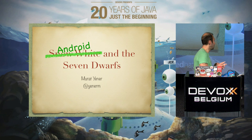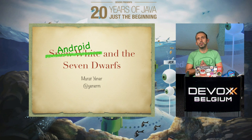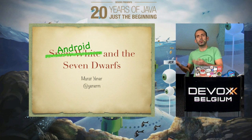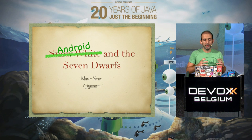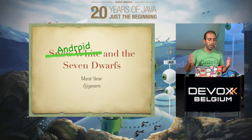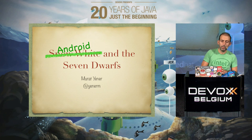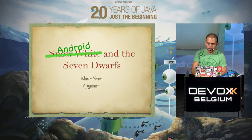Basically the Dwarfs are topics where Android needs some help, so I'll have seven topics but more than seven libraries to solve the problems.